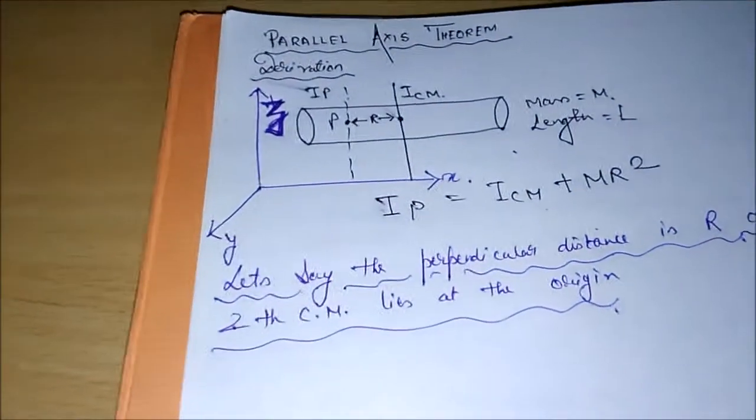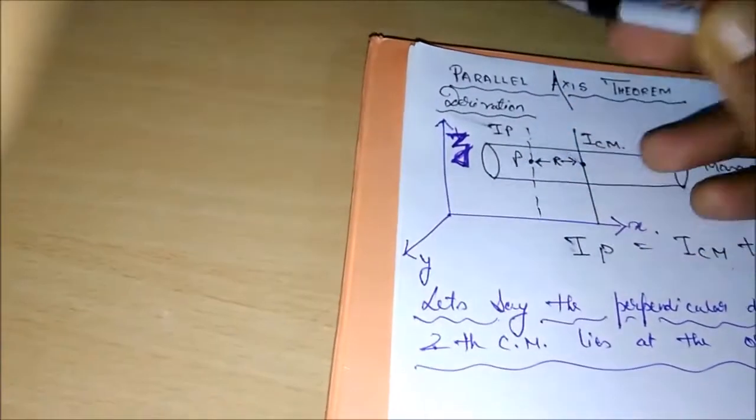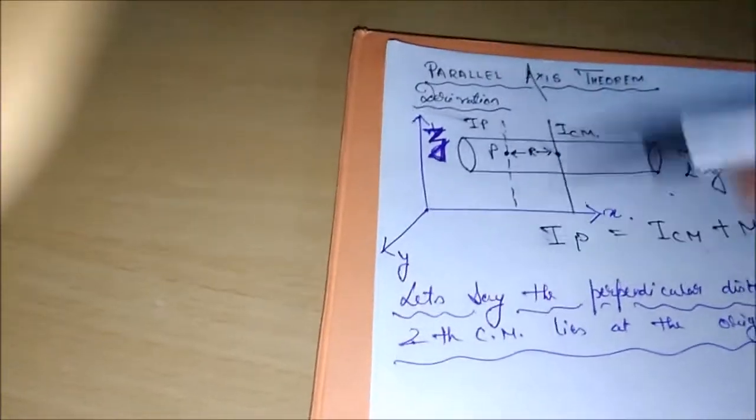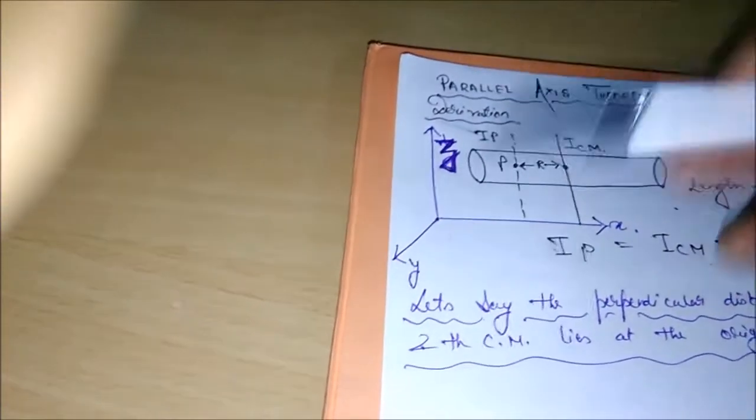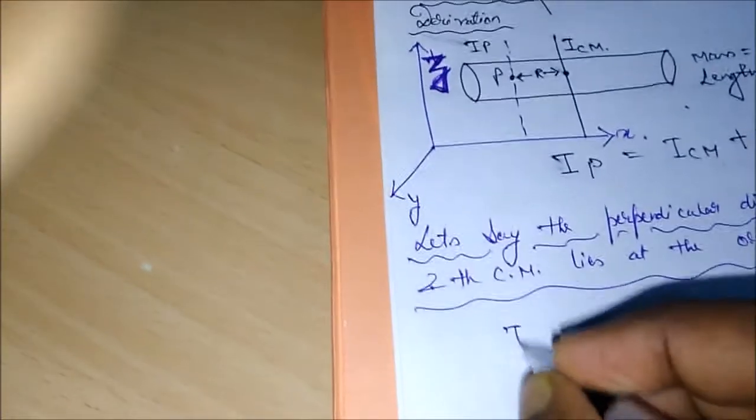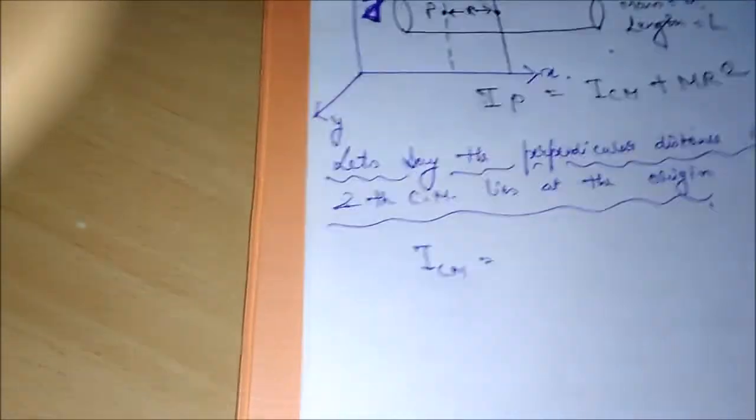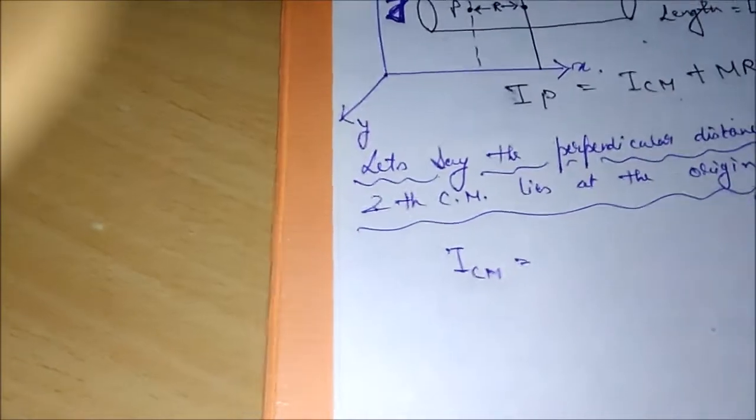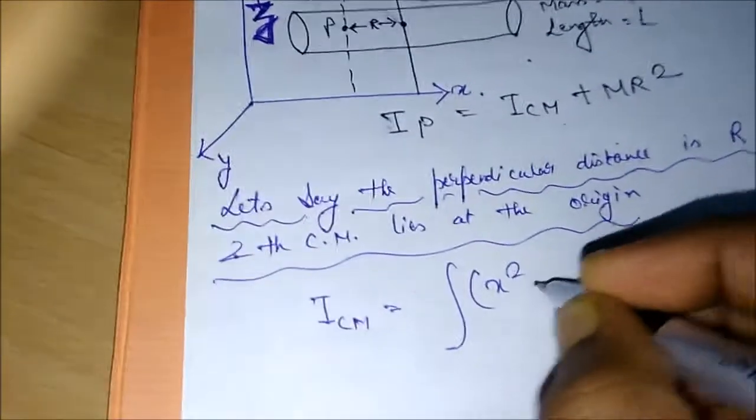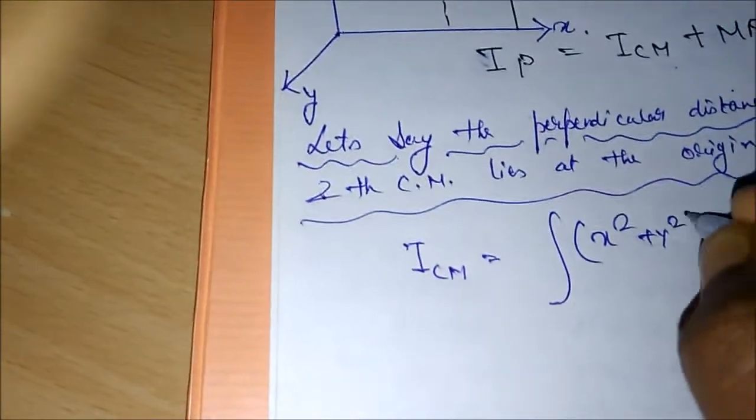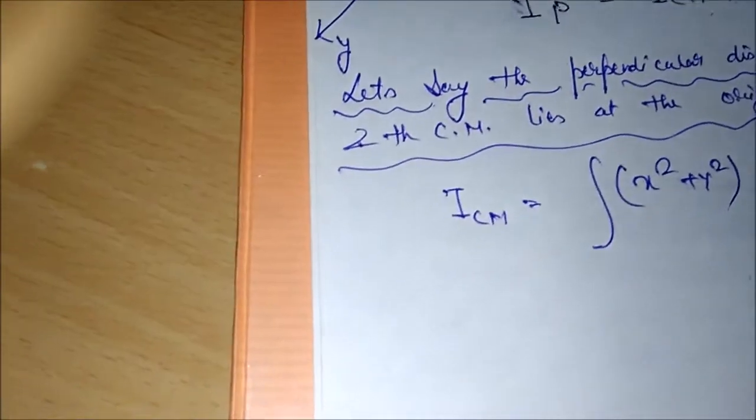So the moment of inertia passing along the z-axis, using calculus we can say: Now remember, this is the moment of inertia at the center of mass, which will be equal to the integration of (x² + y²) dM. Now what is M? M is the mass. I have already written that M is the mass of this entire thing.